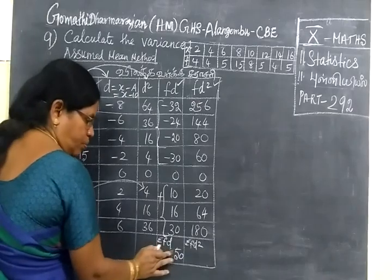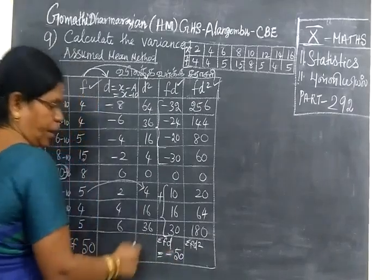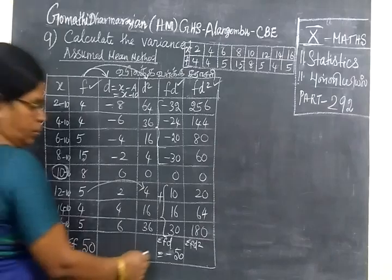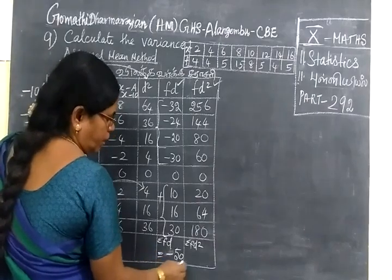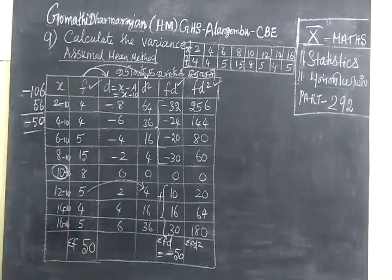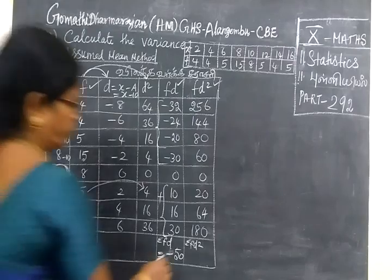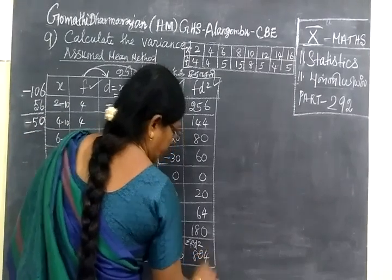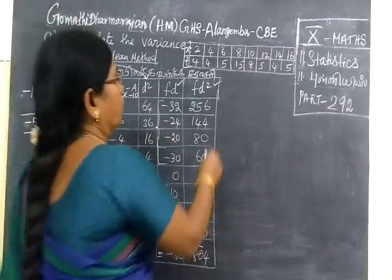If you write suppose plus 50, then the examiner marks you wrong. So correctly, you give importance for sign. And here, if you add, you get 804. So this one is 804.